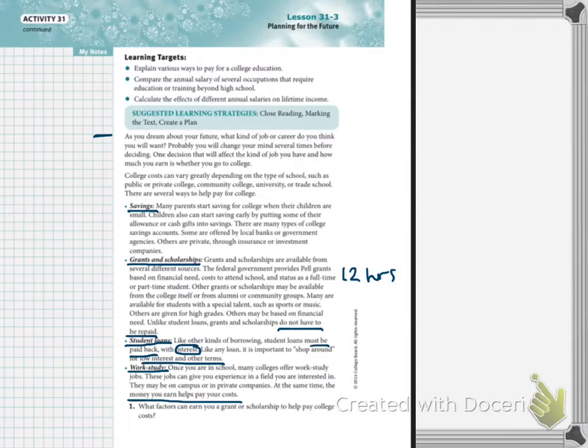What factors can earn you grants or scholarships to help pay for college? Well, let's go back and look up here. It says financial need. It says special skills and grades. So right here, special talent. Oh, that is not a highlighter. I apologize. I thought that was.